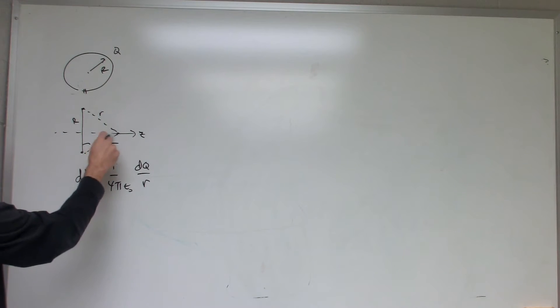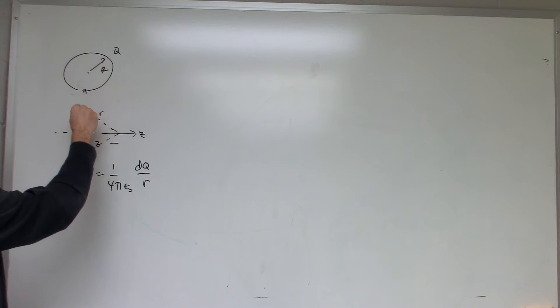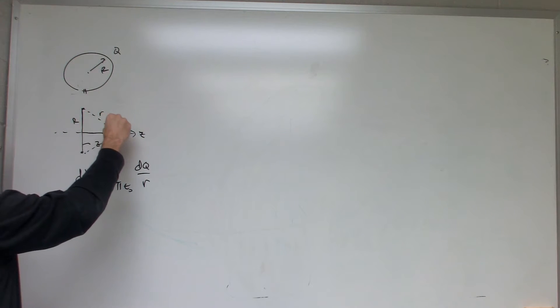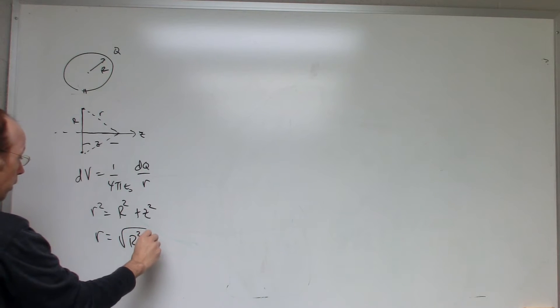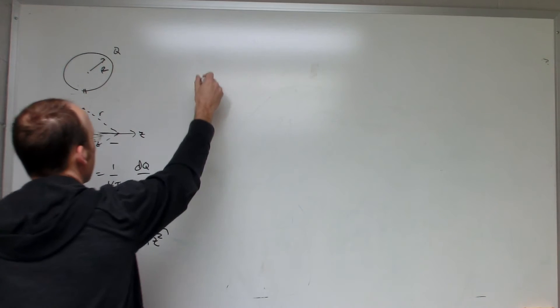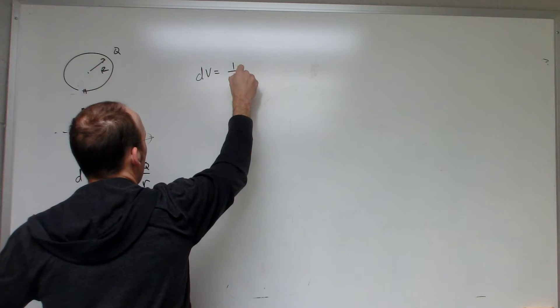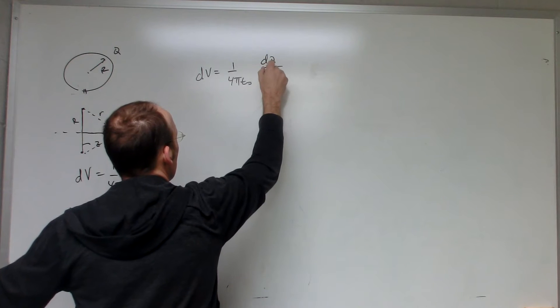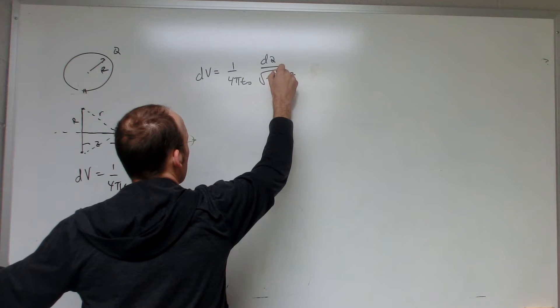What's the expression for r? If I look right here, this is big R, that's z. So r squared equals big R squared plus z squared. So r equals square root of R squared plus z squared. So if I put that in here, I get dV equals 1 over 4π epsilon naught dq over square root z squared plus R squared.